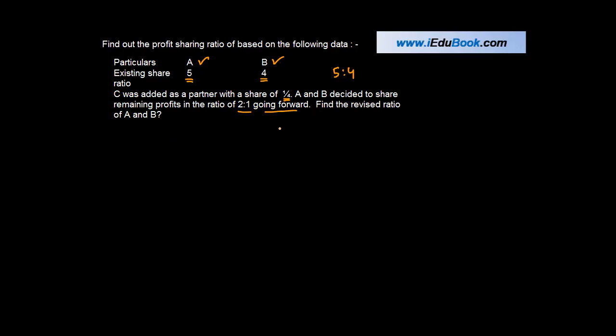Let us first put in the data that is given to us, so we have A here and we have B here. The ratio of A and B between themselves is 5 is to 4, existing ratio.